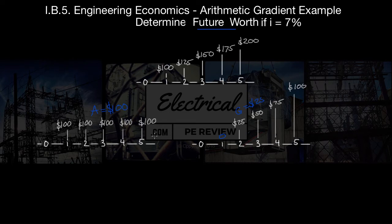And does this work? Let's look at period 5. We would have 100 plus 100 would give us 200. Next, we want to determine our future worth.